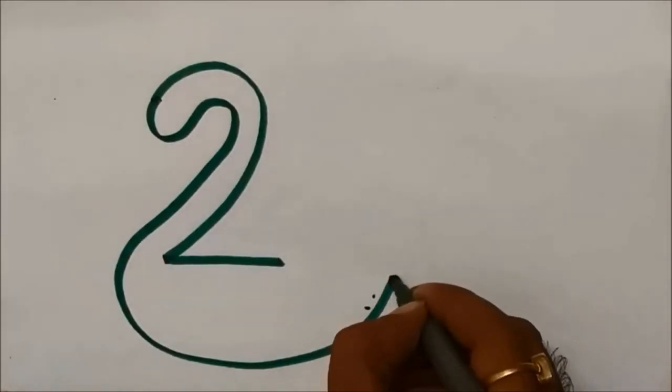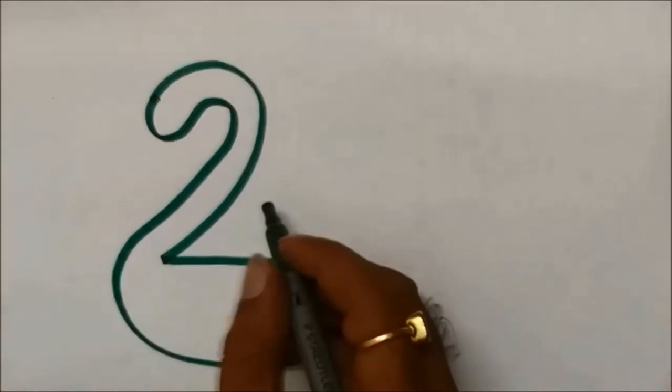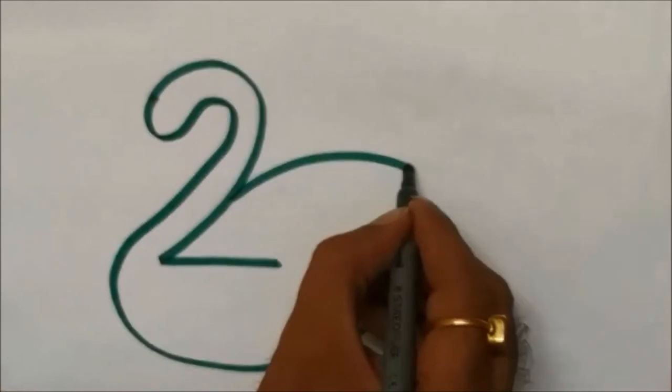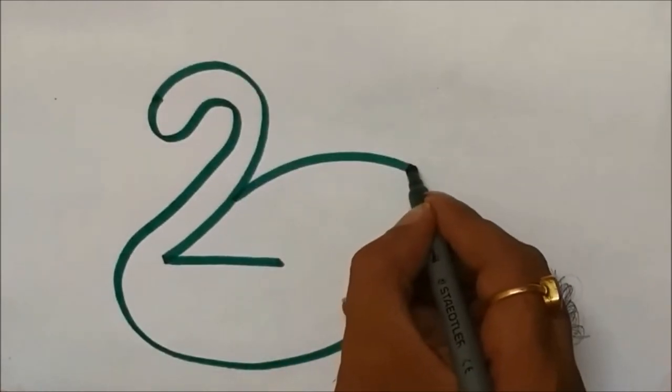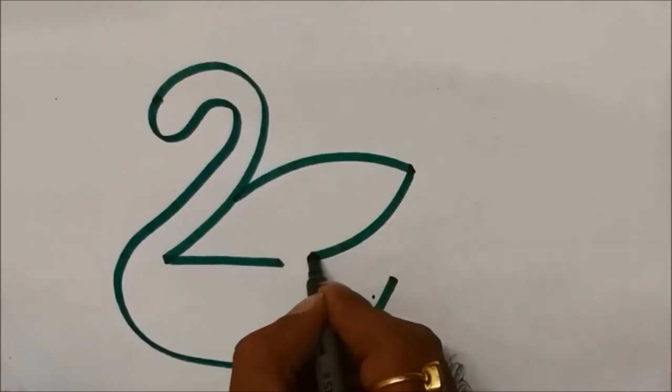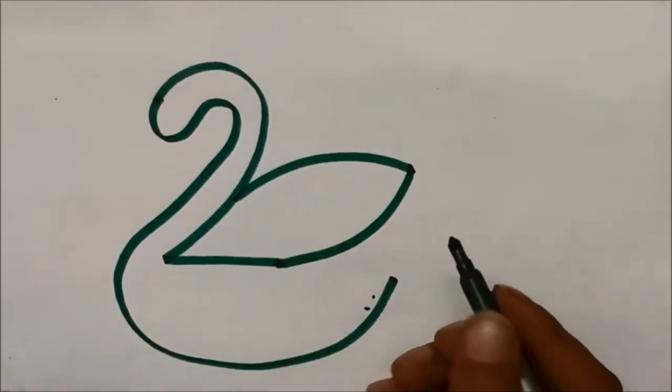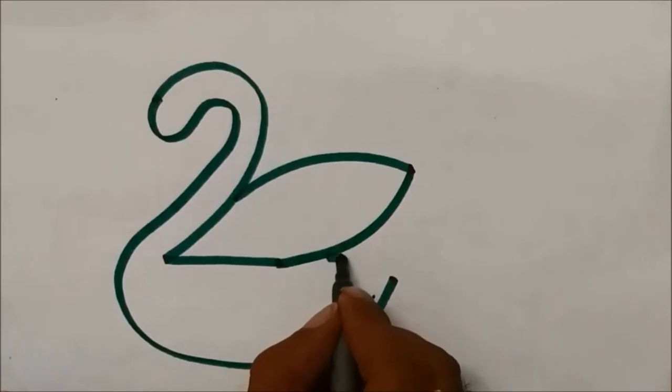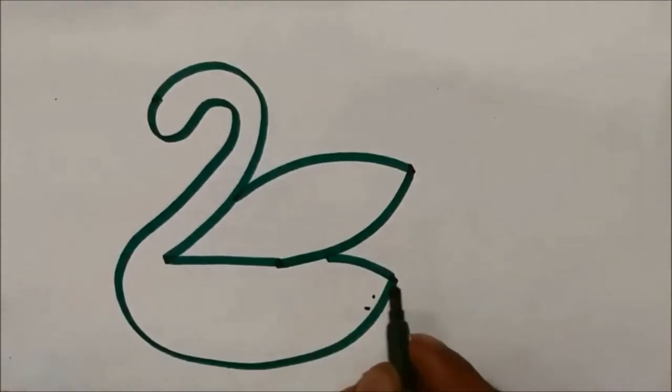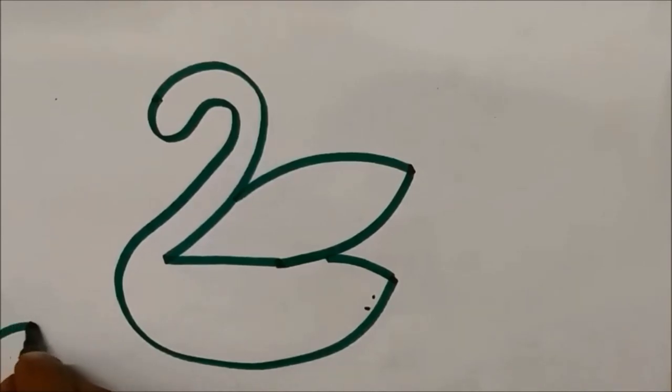One slanting curve going towards upside, one slanting curve coming towards the end of the 2, one more curve going towards the end of the tail and a few wavy lines.